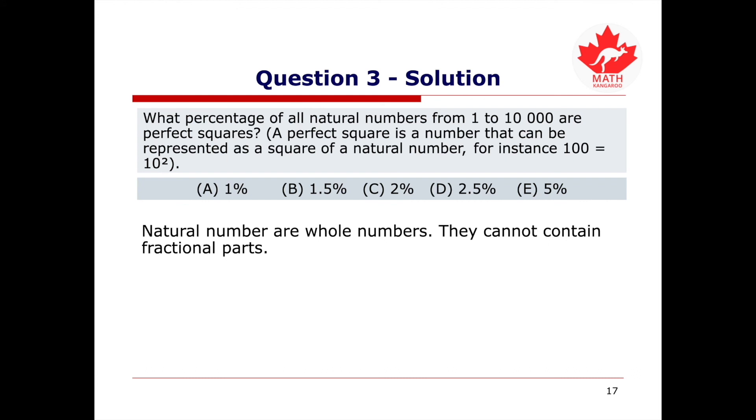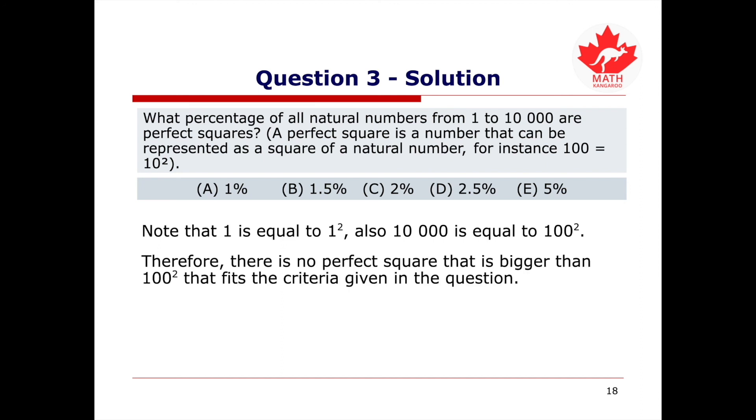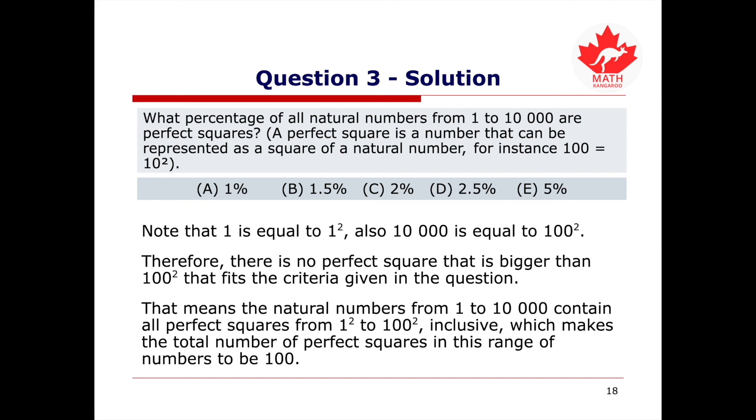Note that natural numbers are whole numbers. They cannot contain fractional parts. Also remember that 10 squared equals 10 times 10. Therefore, in a general form, a perfect square can be represented as n squared or n times n where n is a natural number. Note that 1 equals 1 squared and also that 10,000 equals 100 squared. Therefore, there is no perfect square that is bigger than 100 squared that fits the criteria given in the question. That means the natural numbers from 1 to 10,000 contain all perfect squares from 1 squared to 100 squared inclusive, which makes the total number of perfect squares in this range of numbers to be 100.